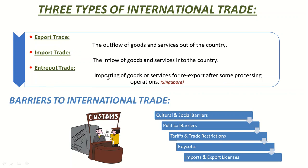What is entrepôt trade? It is the importing of goods or services for re-export after some processing or operations. It means first you purchase a product, then you re-process it, and then you export it to some other country. First you import it from some other country, you re-process it in your own country, and then you export it. Singapore is a very good example — they import oil from oil-rich countries, re-process it, and then export it to other countries.